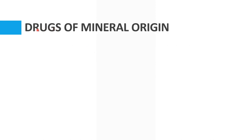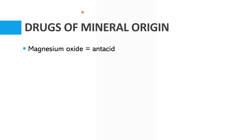We also have drugs from mineral origin. Examples include inorganic salts used in the treatment or prevention of disease states. The first example is magnesium oxide, which can be used as an antacid to relieve heartburn, sour stomach, or acid indigestion.